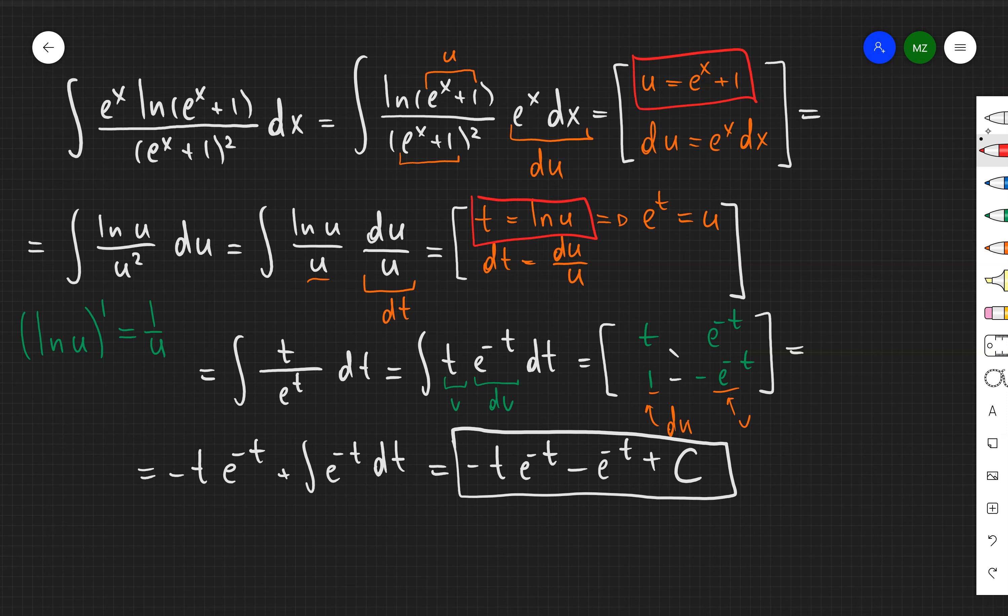And that is my answer but I'm not done. I need to come back to expression in terms of x. So for that first I'm going to replace t with the ln of u and I'm going to obtain negative ln of u over u since e to the negative e to the power of ln of u is just u.